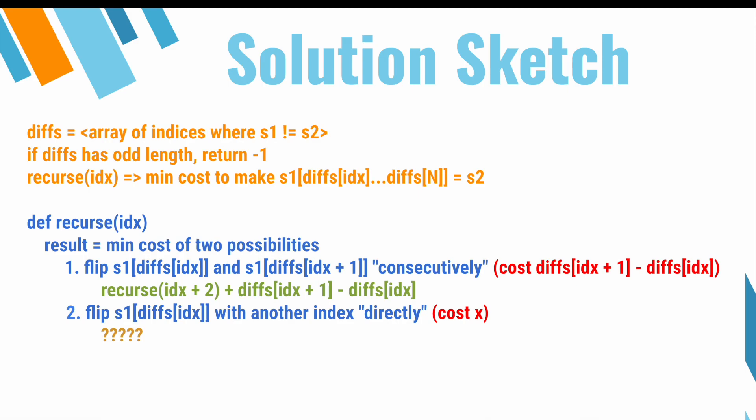Now, the second case is not so simple. We might be tempted to do something like recurse(idx+1) + x, since we're going to hold on to the current index to swap with a later index for cost x. But remember, what's the definition of our recurrence relation? Our definition is recurse(i) represents the cost to make s1[diffs[i]] to s1[diffs[n]] into s2. This recursion has no memory of whether we decided to retain an index previously to pair with a later index.